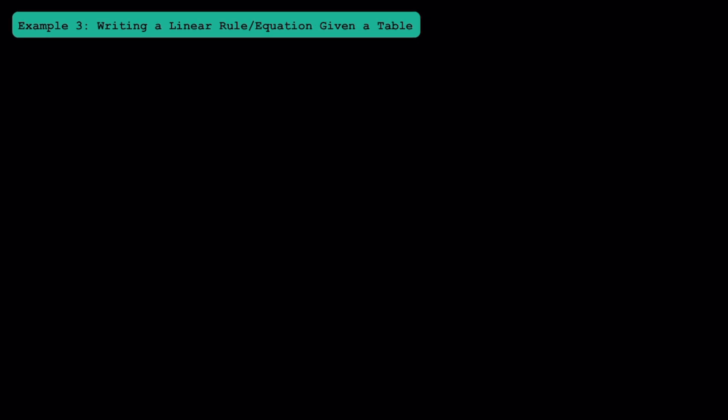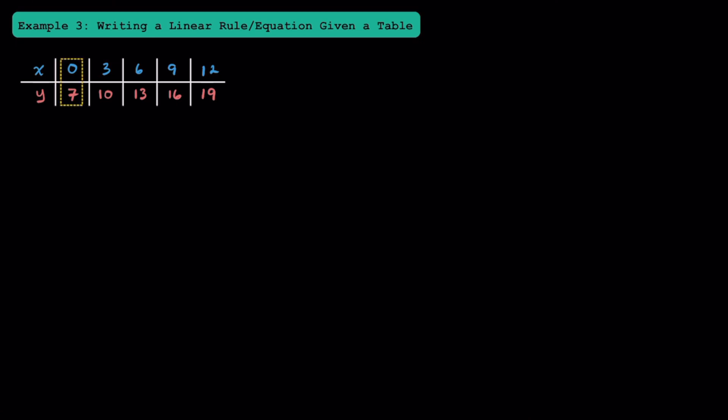Here in example 3, we're going to practice writing a linear rule or a linear equation given a table. While in example 2 we were given a linear equation and filled in the table, here we're going to start with a table and write the linear equation. Let's look at this first table. The strategy here is to see how each x value becomes the y value that pairs with it. Think about how 0 becomes 7 — since it's increasing, you might want to think about multiplying or adding. To get from 0 to 7, you just add 7.